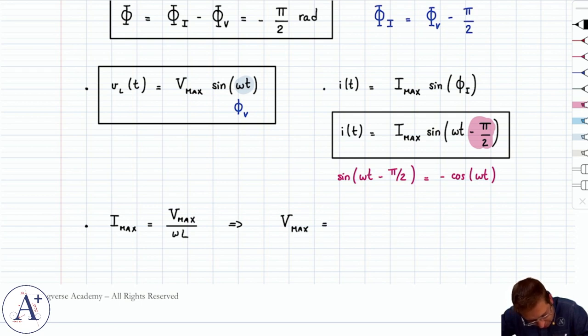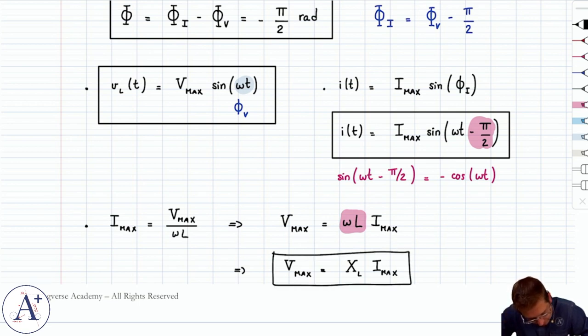So Vmax is ωL multiplied by Imax, and then the coefficient of proportionality here is going to be typically denoted by X_L. So this is going to be Vmax equals X_L times Imax. And X_L has a name—it's called the inductive reactance.